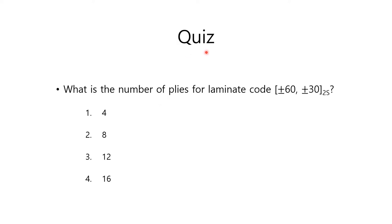Here I have a quiz for you. What is the number of plies for the laminate code double symmetry of plus minus 60 and plus minus 30? Number 1: 4. Number 2: 8. Number 3: 12. Number 4: 16.